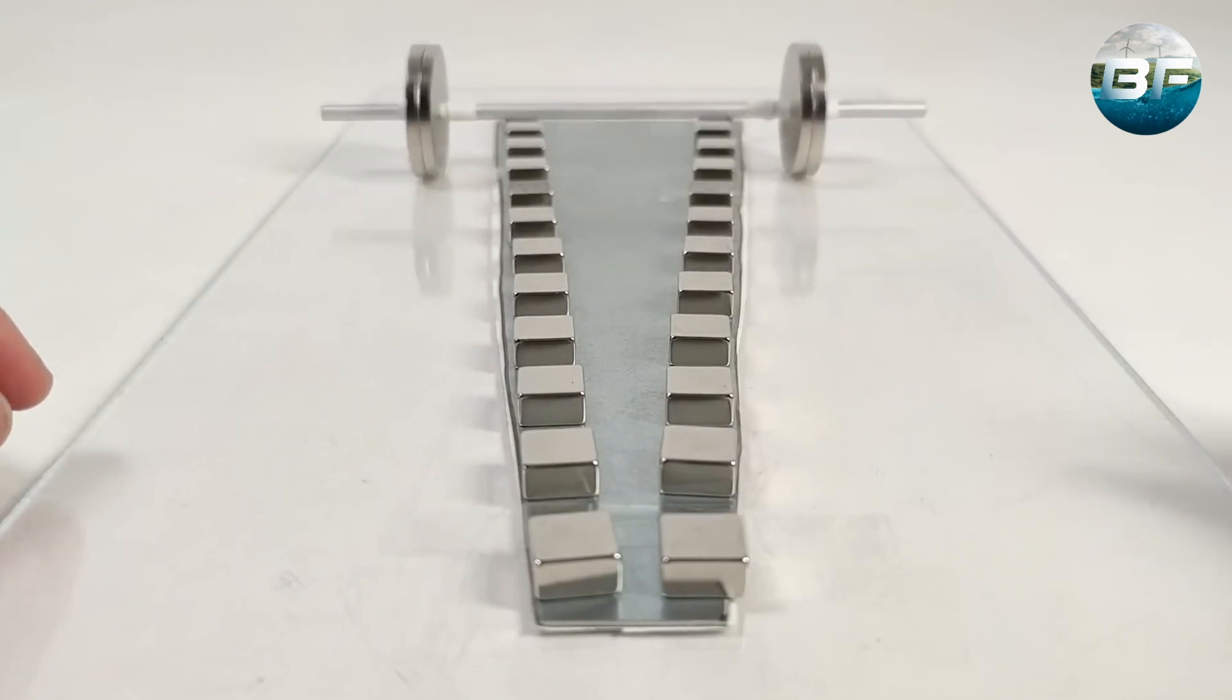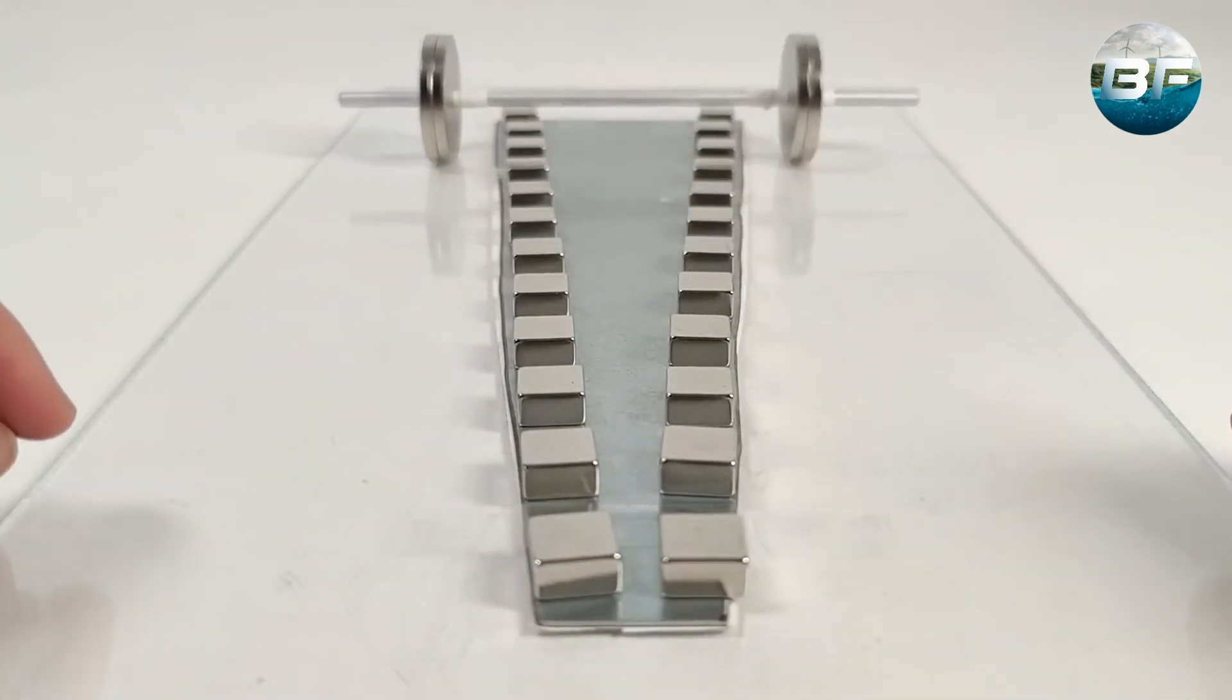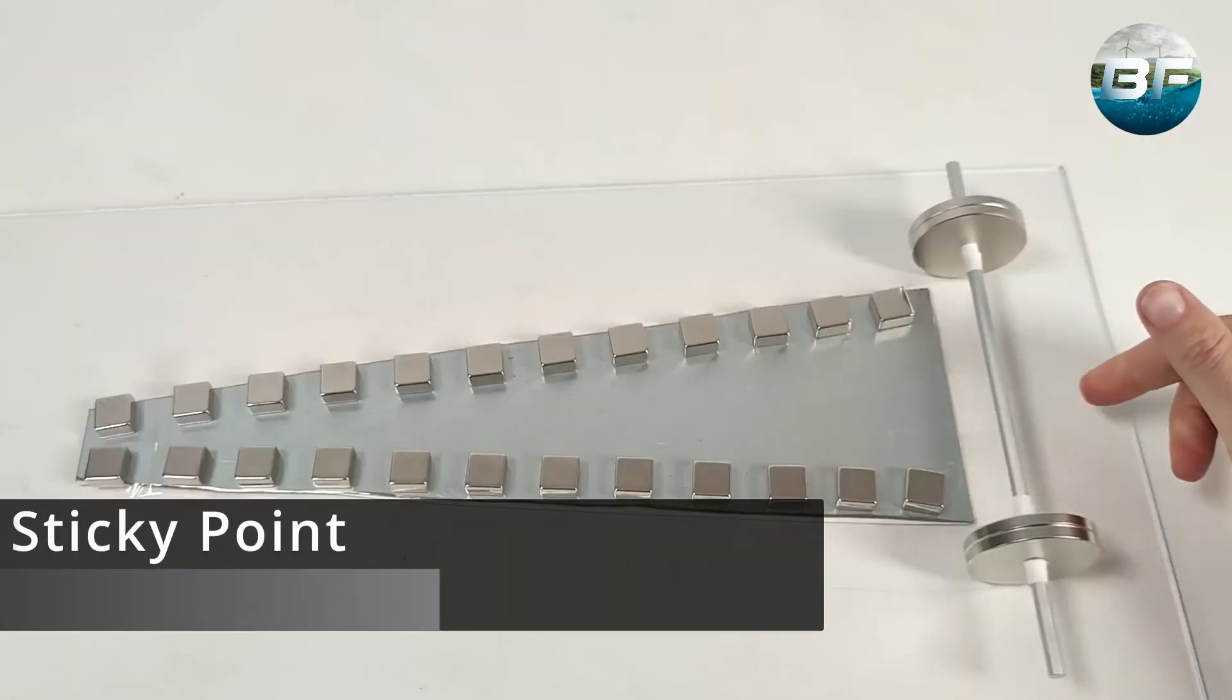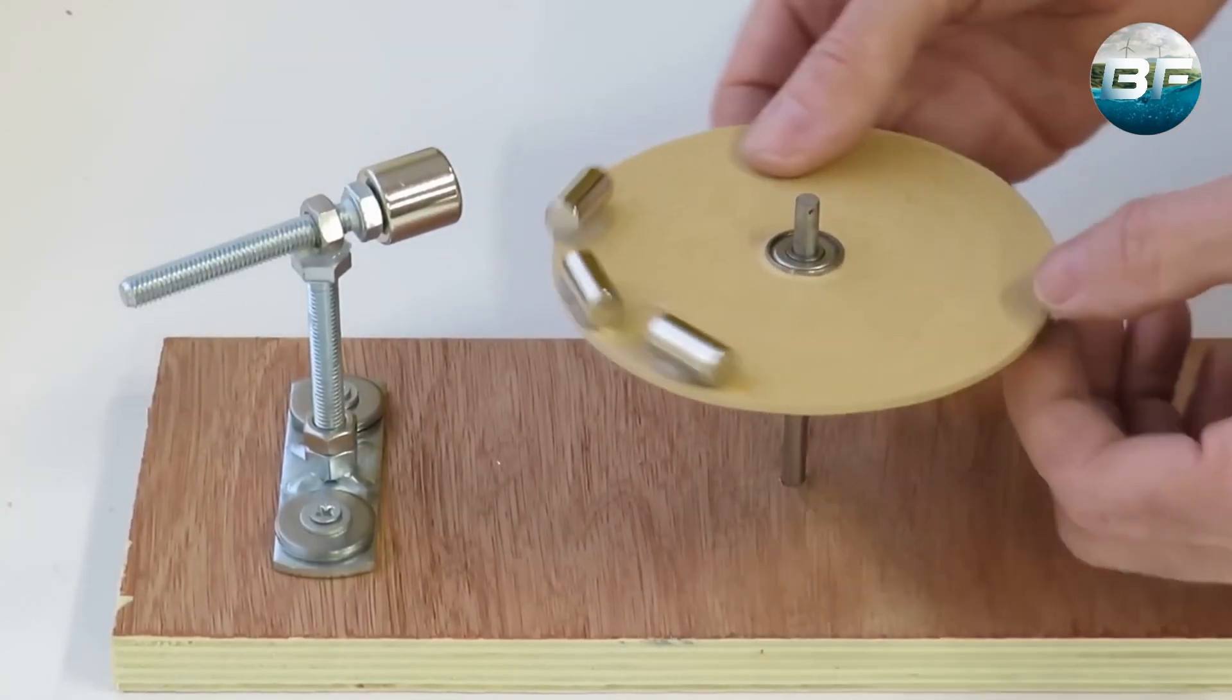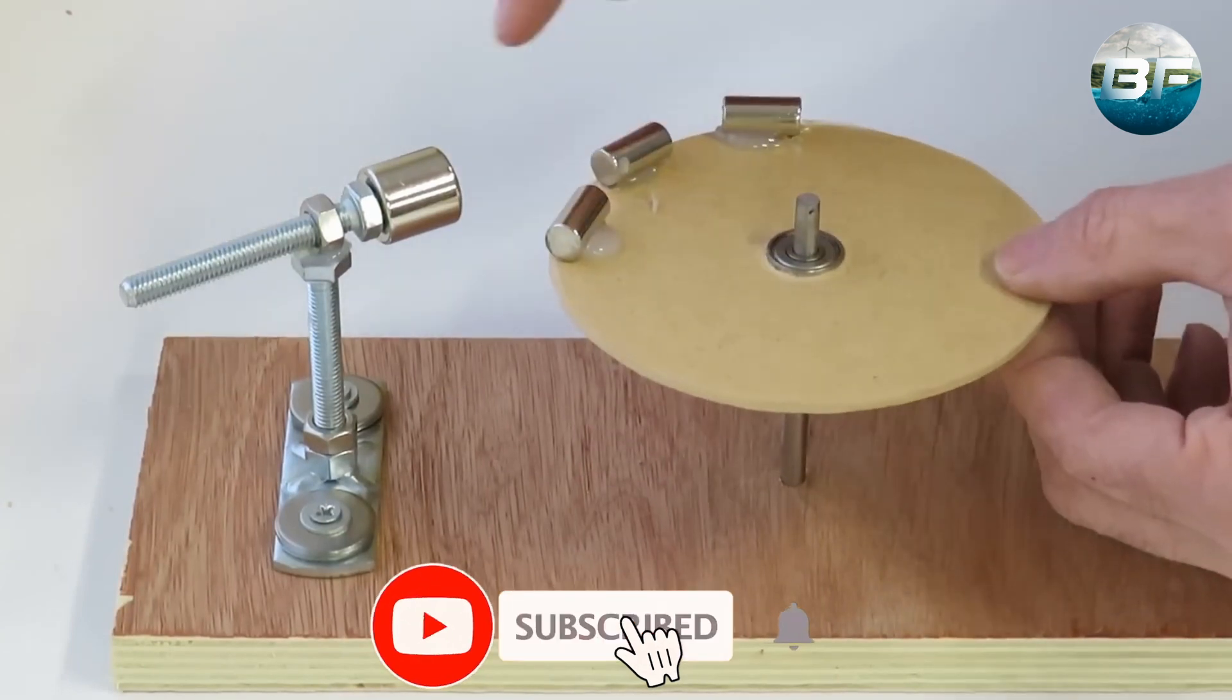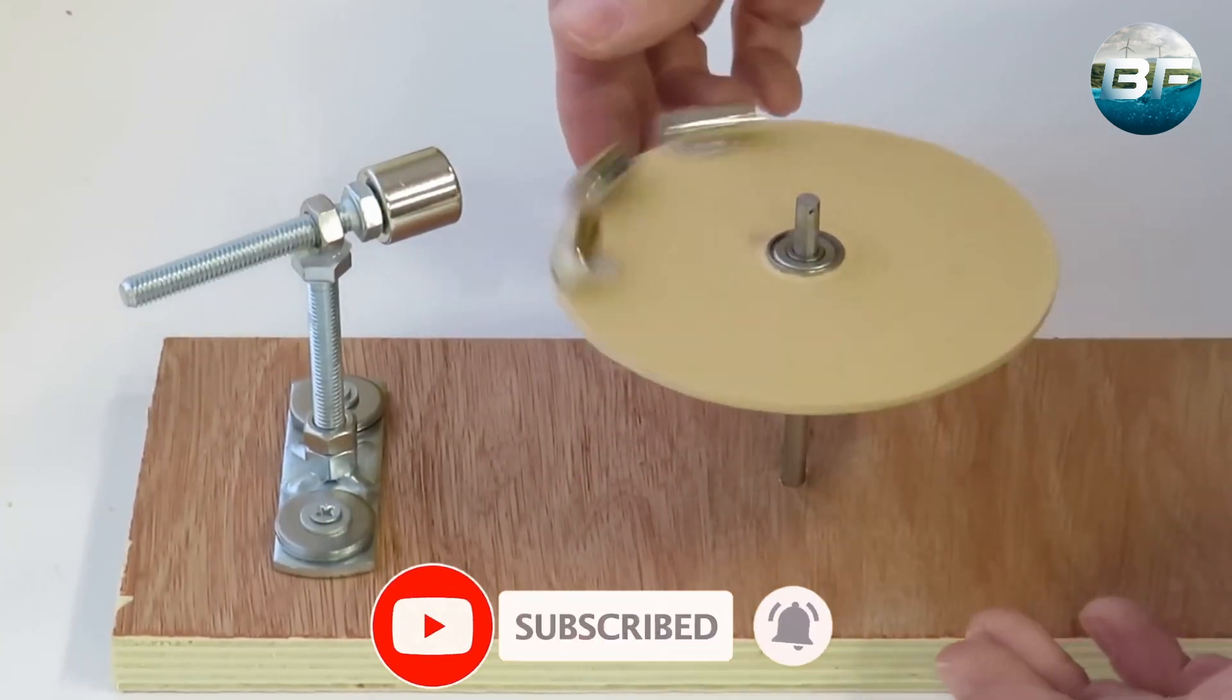But what happens at the transition when the end of the house is reached? Well, that's where things get tricky. We call this a sticky point. It is a stable state of the system where it can come to a stop. The energy released in the form of movement over the V is exactly the same as that needed to return to the starting position.